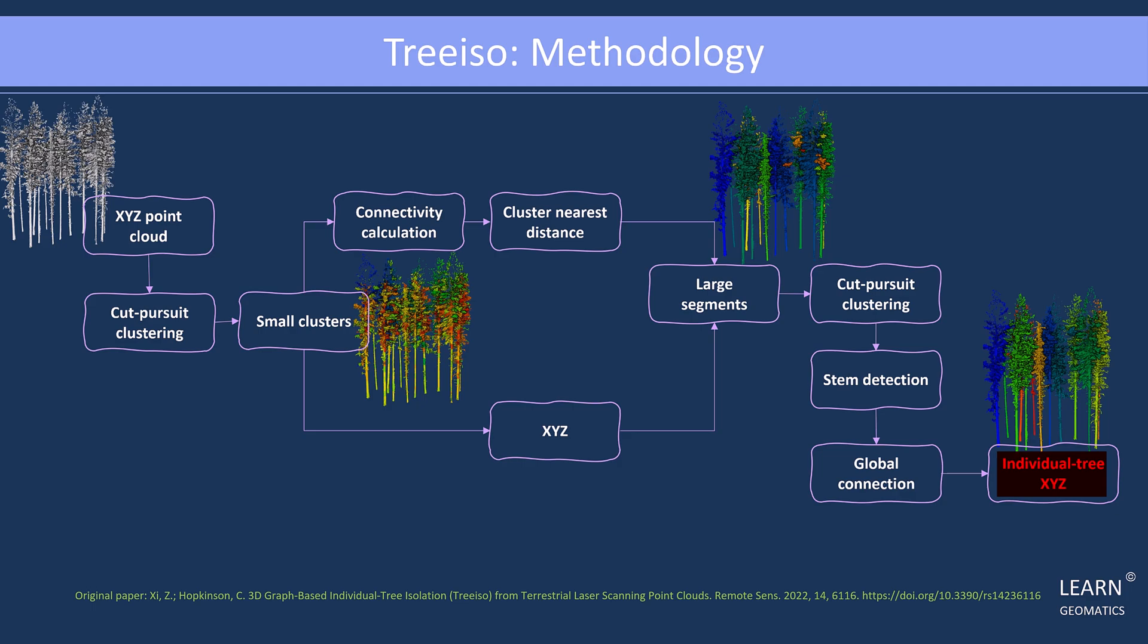In conclusion, the TreeISO algorithm, based on the cut pursuit graph technique, is an invaluable tool for isolating individual trees from terrestrial laser scanning point cloud data. Its multi-step process ensures accurate tree boundaries.